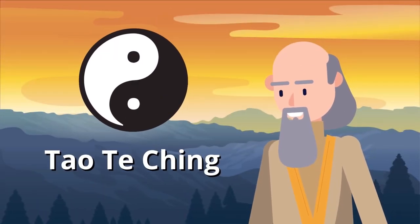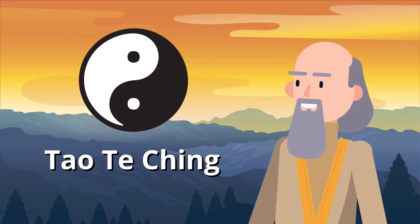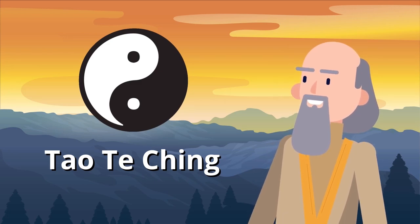In the Tao Te Ching, Lao Tzu writes: When people see things as beautiful, ugliness is created. When people see things as good, evil is created.